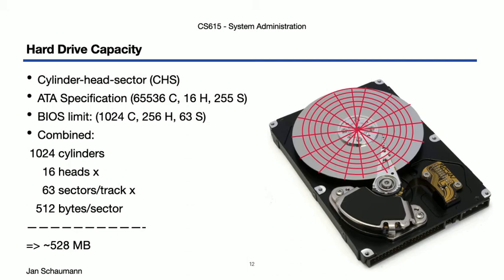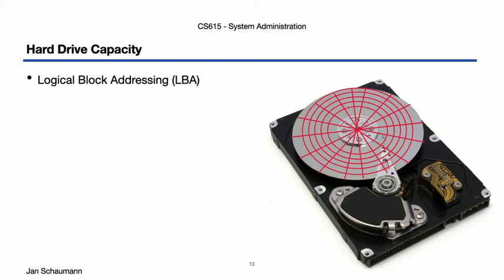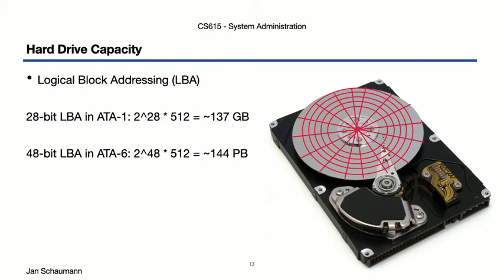Now back in the day, 528 MB seemed certainly like more than enough space anybody could possibly use, but soon enough people wanted to have larger disks. So with time, the different limitations were raised by using different data types to store each of the CHS factors, but the whole approach was eventually replaced by using logical block addressing instead, whereby the blocks would be addressed logically or sequentially via an index. Now we don't have any limitations any longer, right? Well, not so fast. You still have to store the total number of blocks somewhere. So in ATA1, the data type to represent this total number was 28 bits, meaning it could only address 2 to the 28th blocks, or roughly 137 GB of data. This was changed in 2003 with the ATA6 standard, which now uses 48-bit LBA, which yields a somewhat more comfortable 144 petabytes.